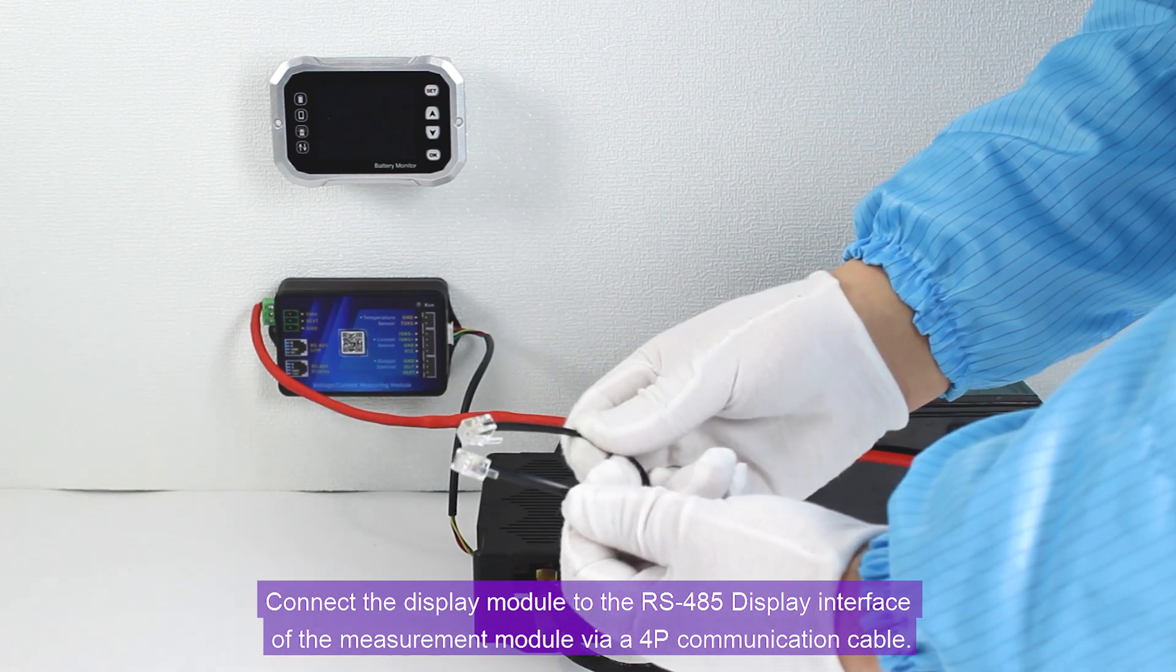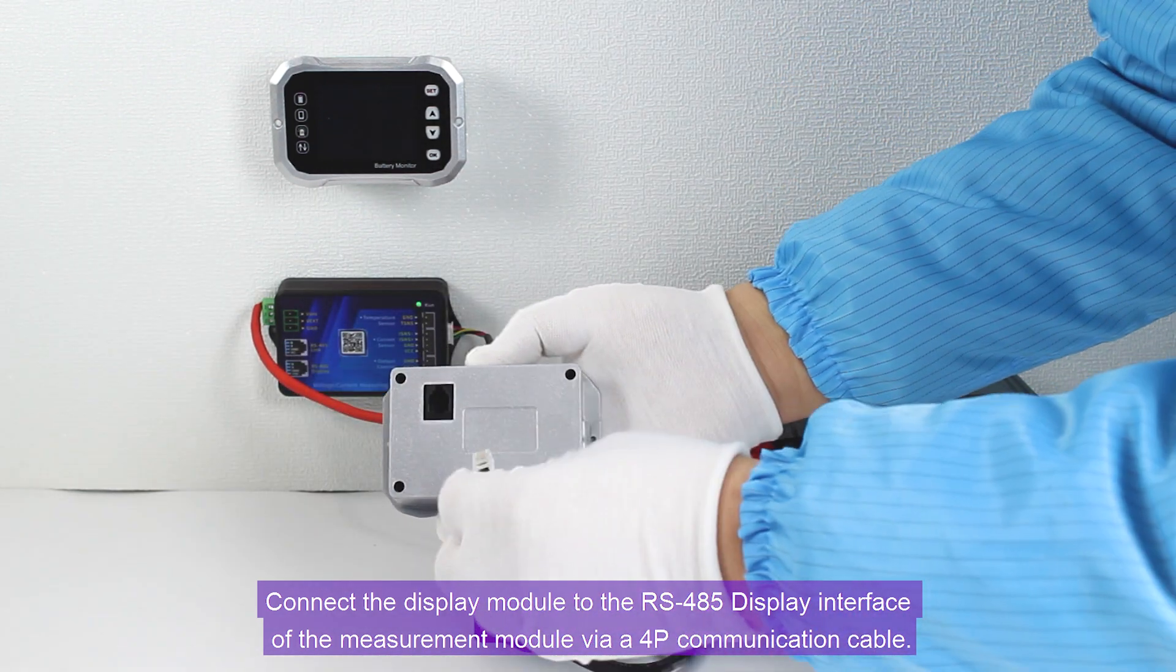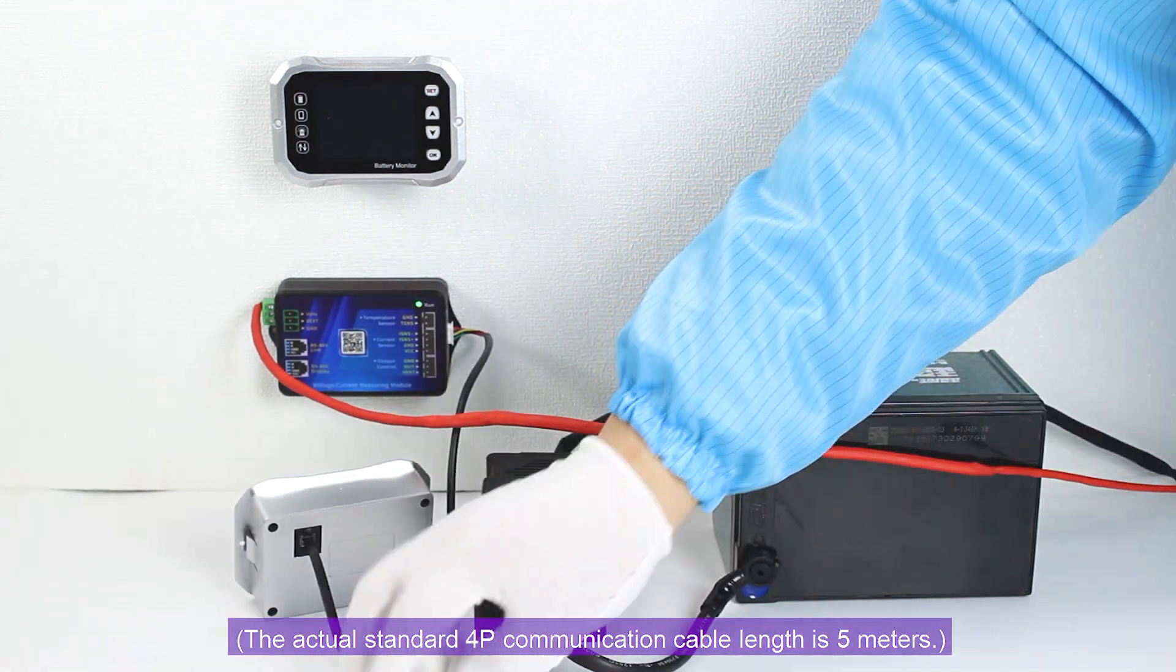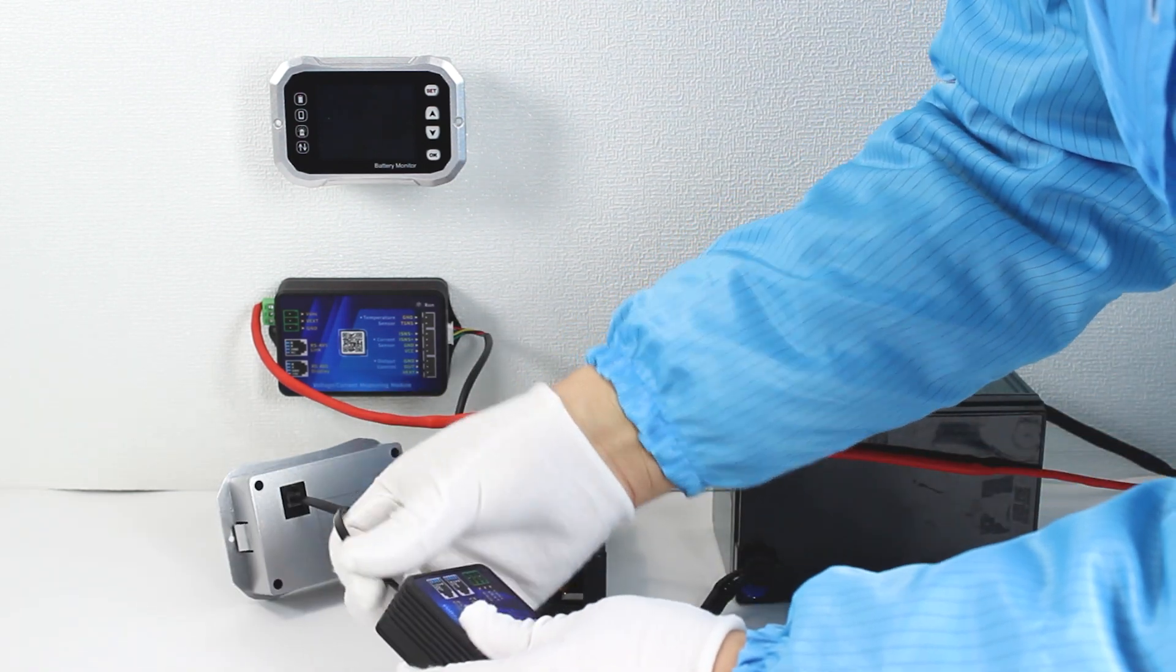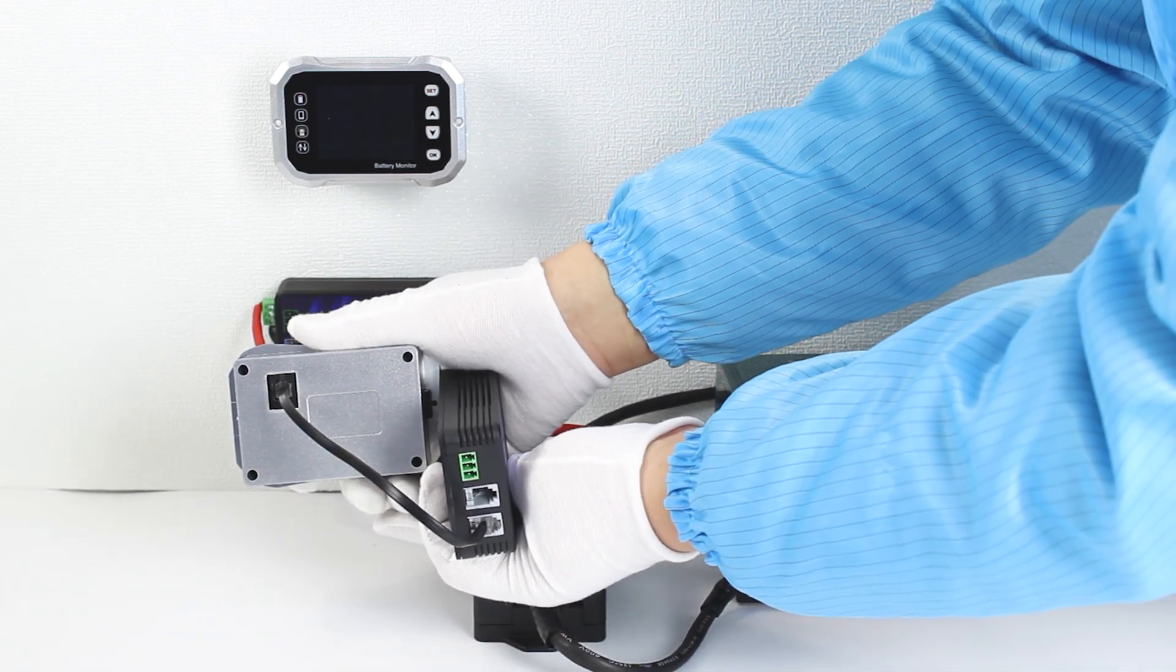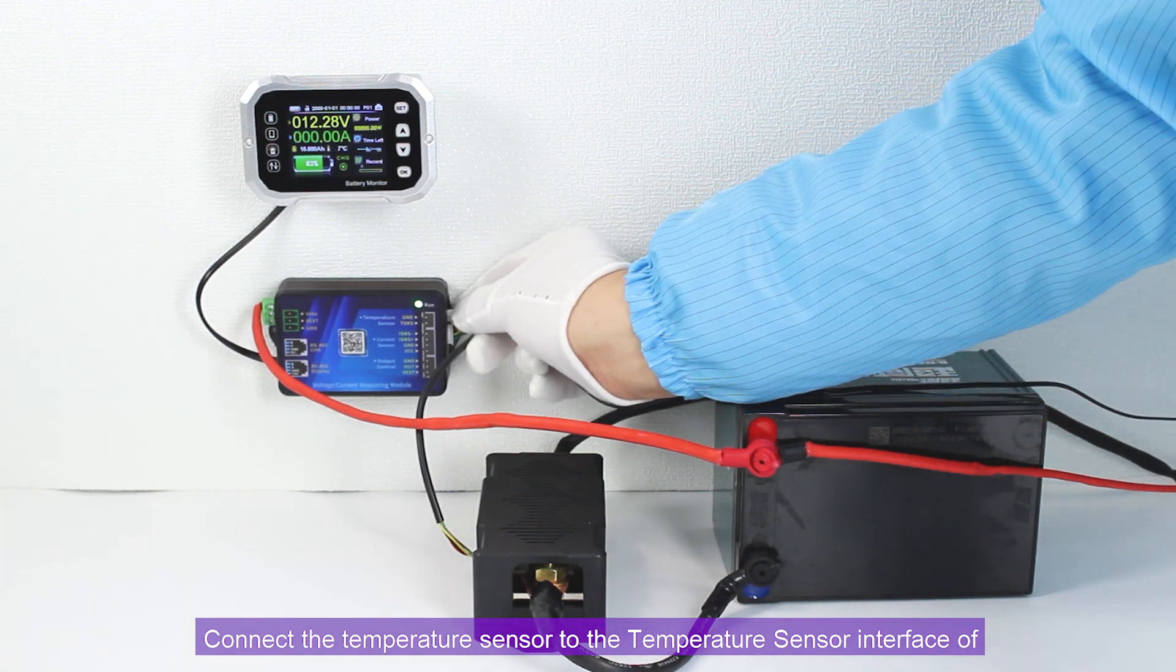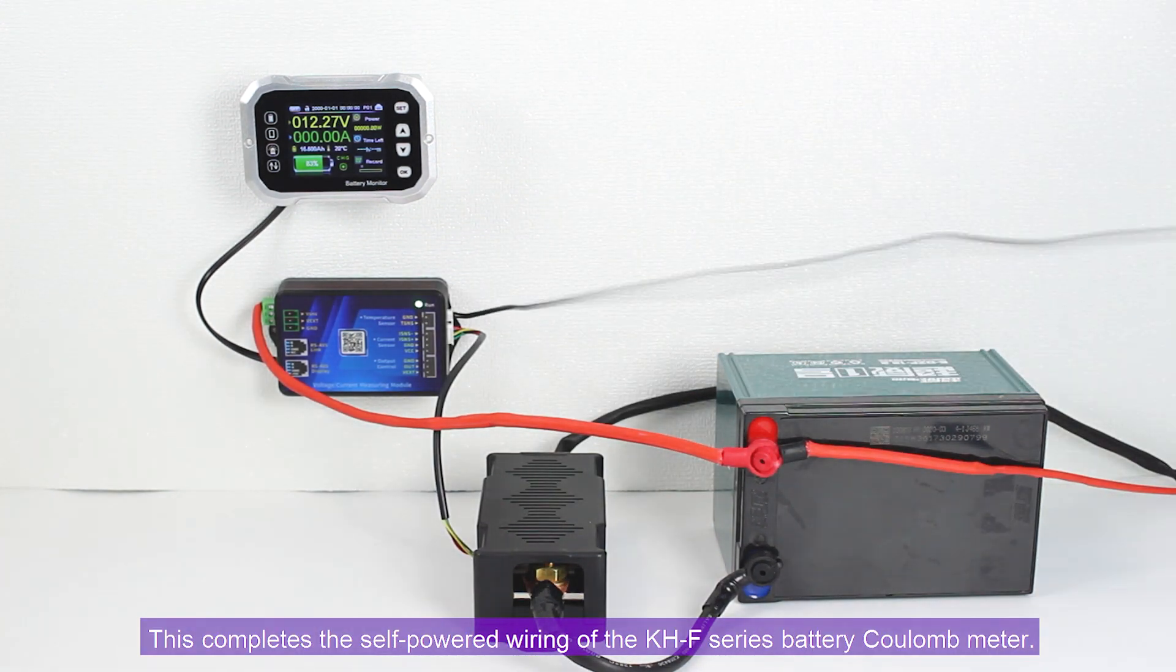Connect the display module to the RS485 display interface of the measurement module via 4P communication cable. The actual standard 4P communication cable length is 5 meters. Connect the temperature sensor to the temperature sensor interface of the measurement module. This completes the self-powered wiring of the KHF series battery kilometer.